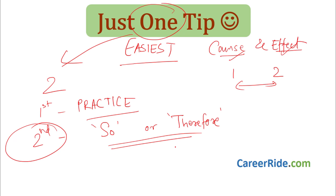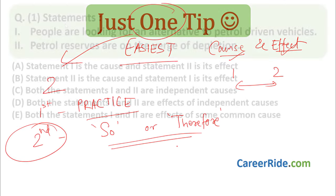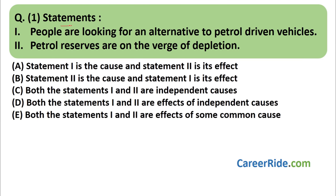Moving to question number one. Statements: (1) People are looking for an alternative to petrol-driven vehicles. (2) Petrol reserves are on the verge of depletion. The question format gives two statements and five options. Option one: statement one is the cause and statement two is its effect. Option two: statement two is the cause and statement one is its effect.